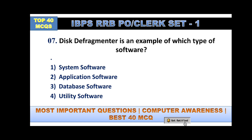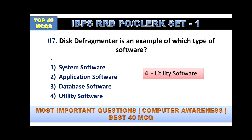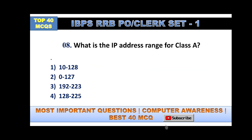Question number seven: defragmenter is an example of which type of software? The options are system software, application software, database software, or utility software. The answer is utility software.